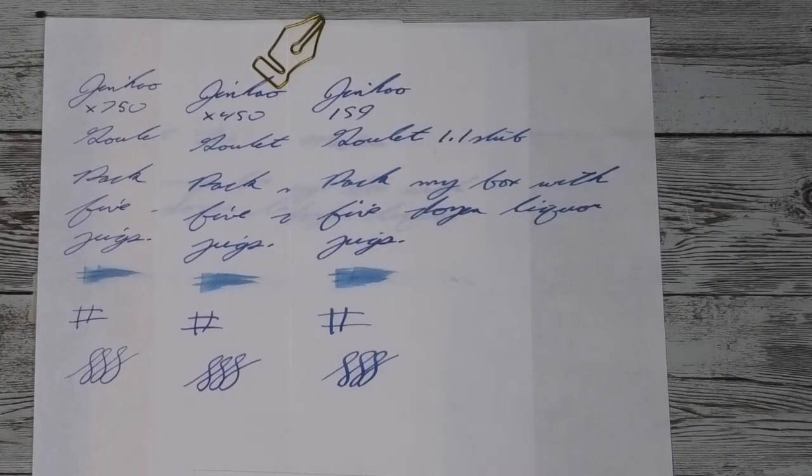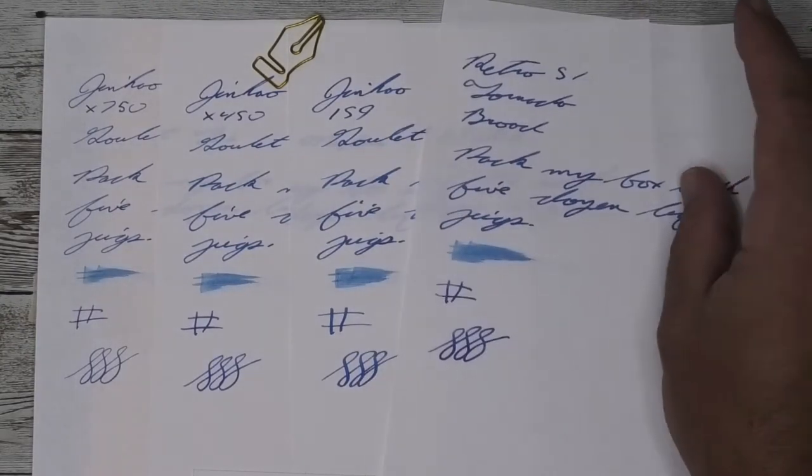Now for something a bit more standard in comparing writing size. I use Namiki Blue to do this. Here it is with a Yovo Extra Fine on the left, medium in the middle, and a 1.1 stub on the right.